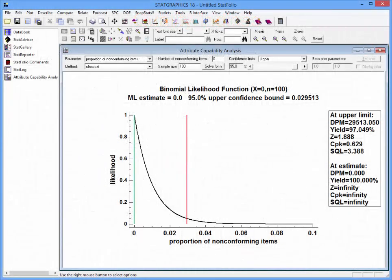Returning to StatGraphics 18 for a moment, you'll see the estimated quality indices both at the maximum likelihood estimate, where DPM is 0, yield is 100 and the other three indices are infinity, and also at the upper quality limit.